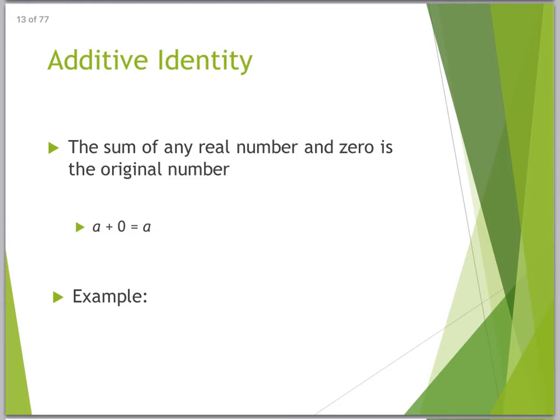Okay, this is what I call one of those kind of like, duh, properties. The sum of any real number and 0 is the original number, so additive identity. In other words, no matter what I add 0 to, it does not change. So 4 plus 0, I know you're going to be surprised, is still 4, right? There you go, there's your example.